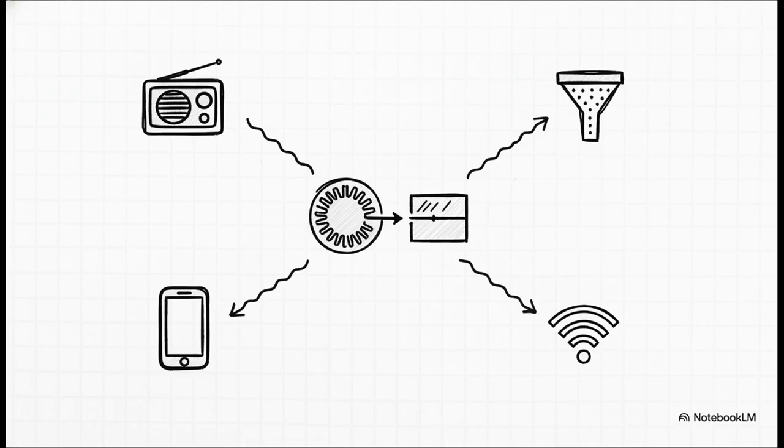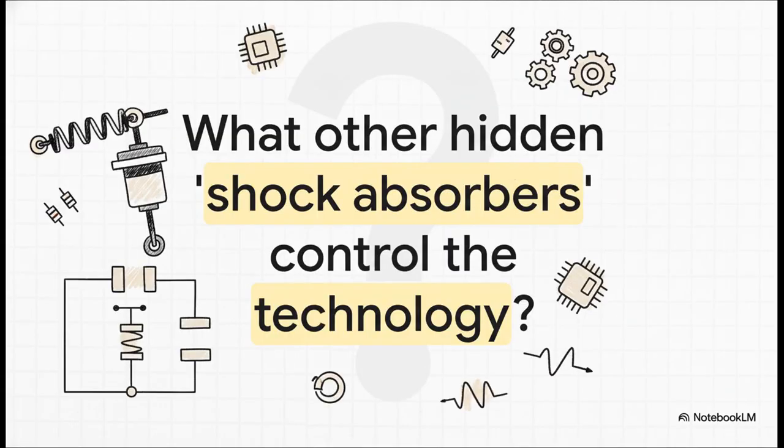And that same idea is the foundation for your phone, your Wi-Fi, everything. So this simple partnership, the spring and the damper, the coil and the capacitor, it's a masterclass in control. It's about taming a wild bounce to create the precise, predictable world of modern technology. It really makes you wonder, doesn't it? What other hidden shock absorbers are quietly at work controlling the tech that we use every single day? Thanks for joining me.